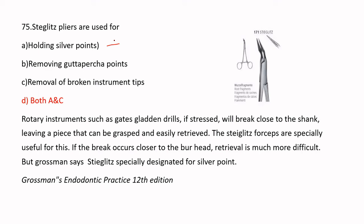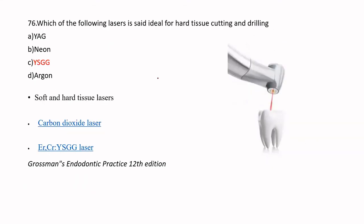Stieglitz pliers are used for both holding silver points and removal of broken instrument tips. Historically they were used to hold silver points, but in recent years they are primarily used for removal of broken instrument tips. They can be placed into the canal to grasp the broken instrument and easily retrieve it.